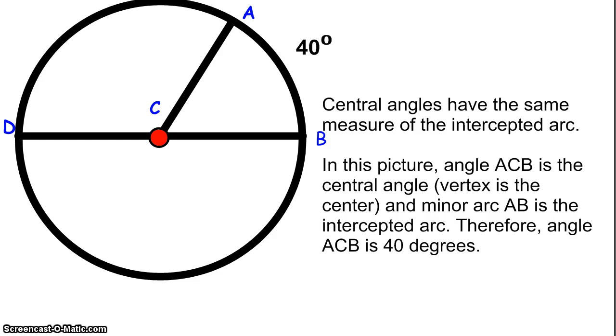We've already discussed how central angles represent their intercepted arc. In this picture, angle ACB, which is a central angle, and the minor arc AB, which is the intercepted arc. Those are the two things we're looking at. So remember, the central angle and the intercepted arc are the same thing.